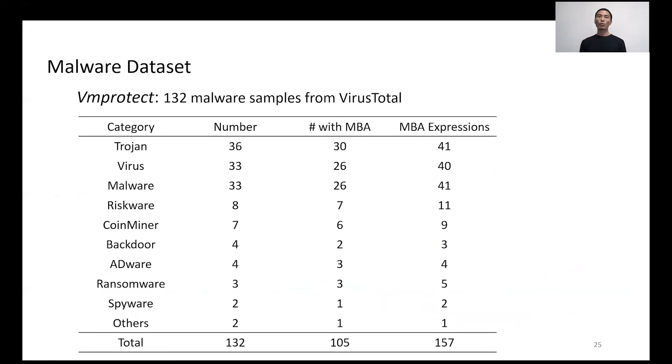Regarding the usage of MBA in malware obfuscated by VMProtect, we collected 132 samples from VirusTotal by searching the keywords VMProtect and VMP. The table summarizes the collected malware samples and related MBA expressions. Among the 132 malware samples, we identified 157 MBA expressions in 105 samples from different categories. It indicates that MBA widely exists in diverse types of VMProtect malware, from traditional Trojans and viruses to modern ransomware and spyware.